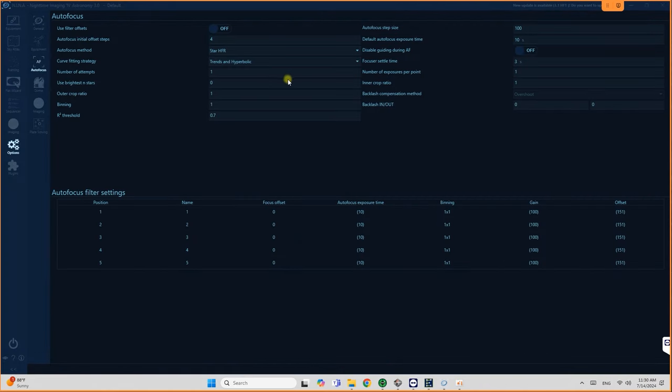Now, there are different ways how you can set backlash compensation. The first one is you go to options. I mean, if you use Nina, the first one would be you go to options, autofocus, and here you can set your backlash compensation for inwards moving and outwards moving here.